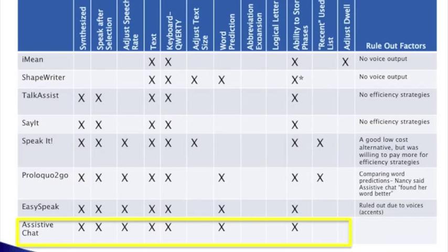When we apply the assessment findings to the feature matching chart, we come up with 12 key features. In Nancy's case, these are: an app that has synthesized speech, speaking after selection, the ability to adjust speech rate, a text-based app, a QWERTY keyboard, the ability to adjust text size, efficiency strategies like word prediction, abbreviation expansion, logical letter encoding, the ability to store phrases, a recently used list, and the ability to adjust dwell.